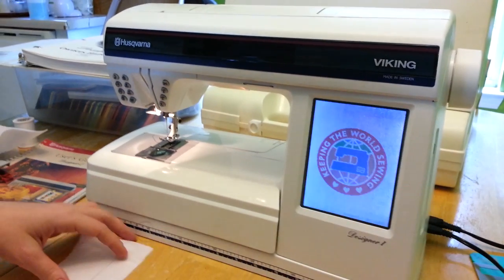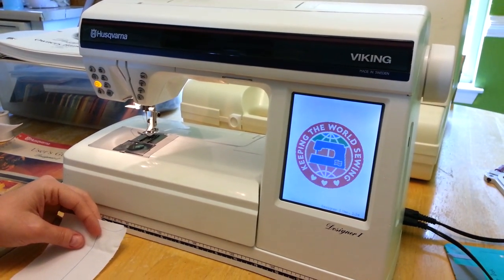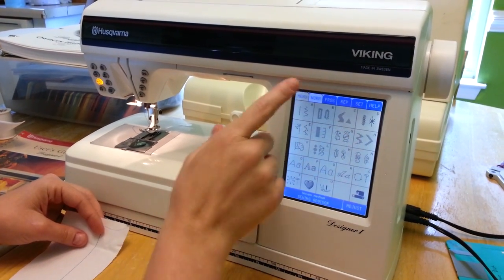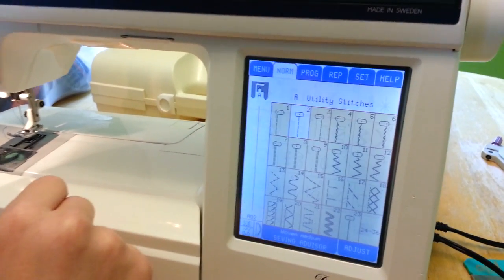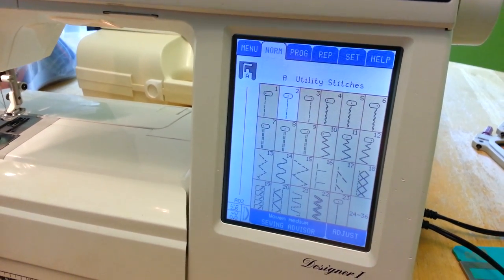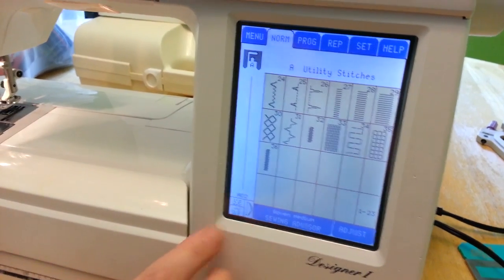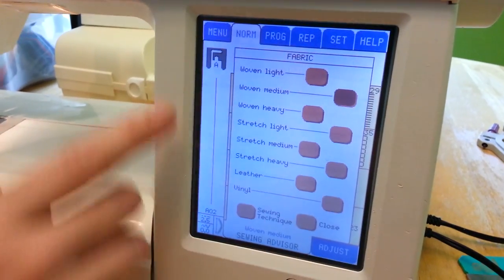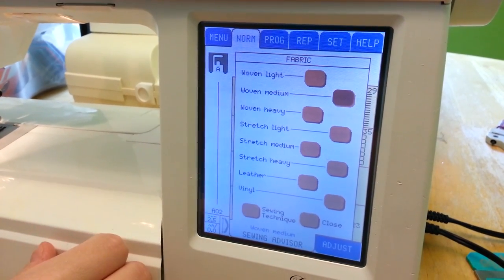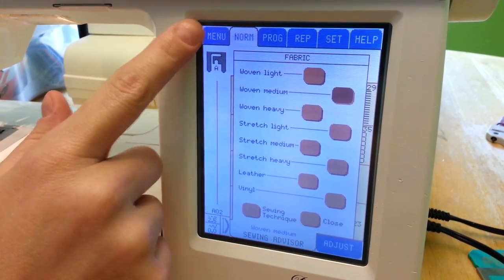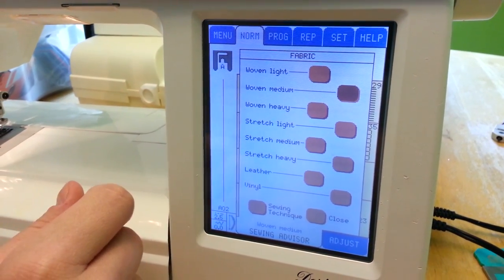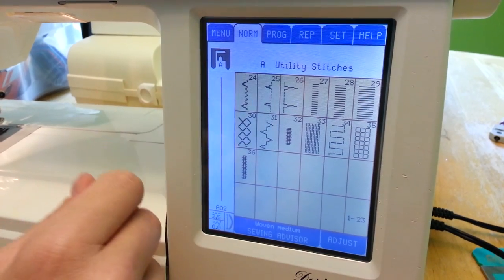We're going to power it on. Here are all of the stitch features. So under A, you have all of these. And you can do the sewing advisory. Select which type of fabric that you're using. It'll tell you what foot to use, and it adjusts for it as well. Let's go back to the menu.